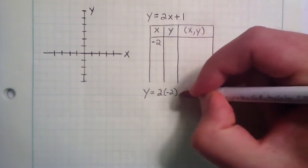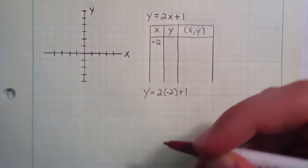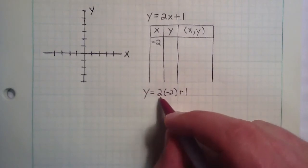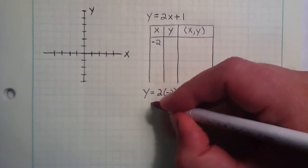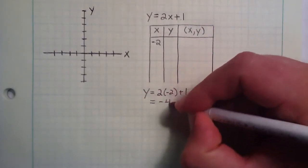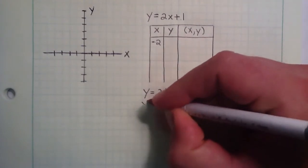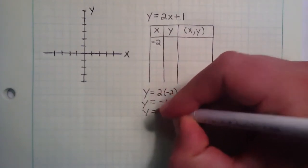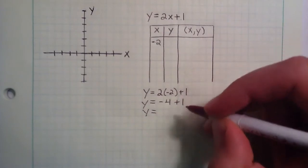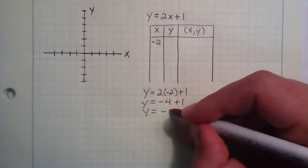And then we simply add the 1. Now we simplify this. 2 times negative 2 gives us negative 4. And then we add the 1. So now we have y equals negative 4 plus 1, or simply y equals negative 3.